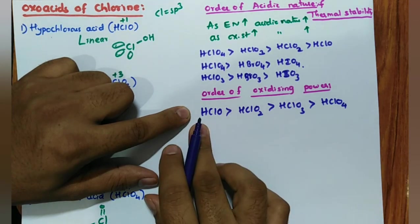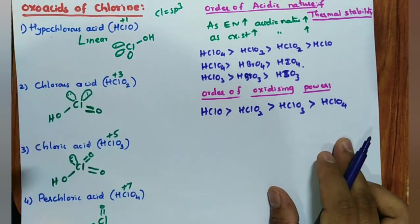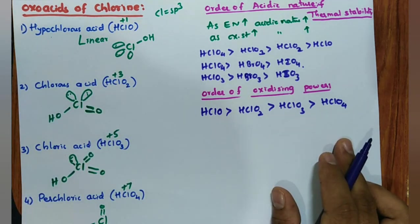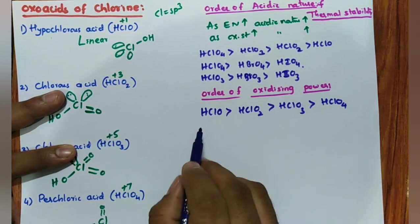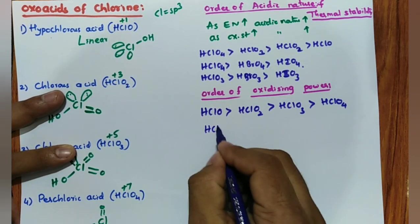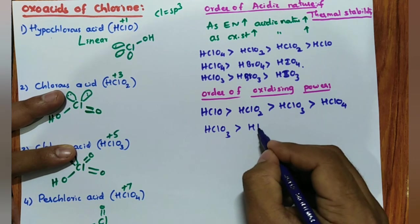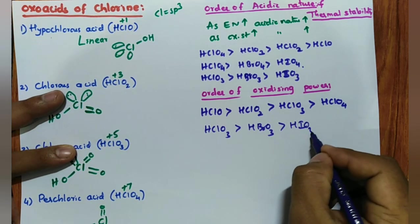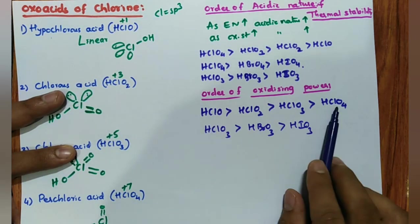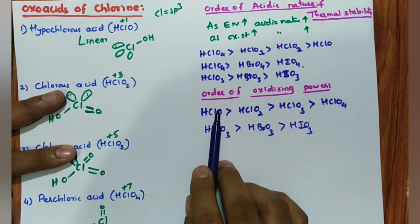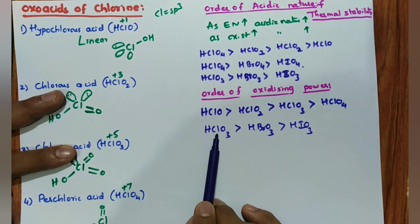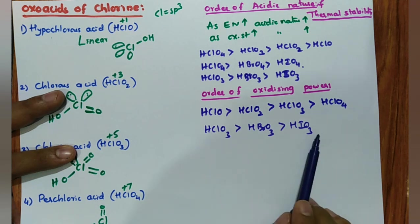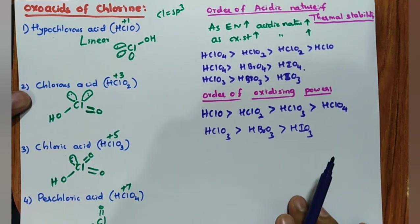Order of oxidizing nature: HClO > HClO₂ > HClO₃ > HClO₄ — the thermally less stable acid acts as a better oxidizing agent. For across halogens with same oxidation state: because of the electronegativity factor, HClO₃ > HBrO₃ > HIO₃ for oxidizing nature. So remember, thermal stability and oxidizing nature are in opposite order.